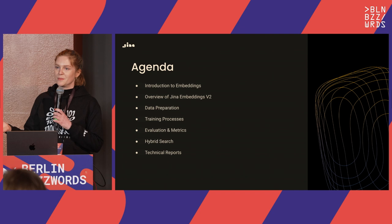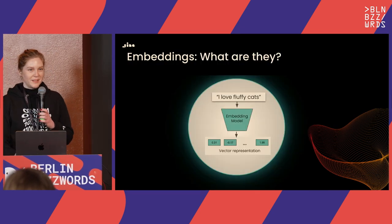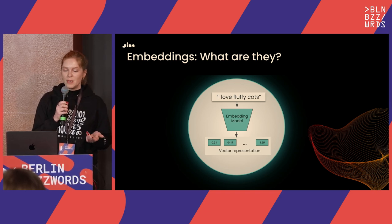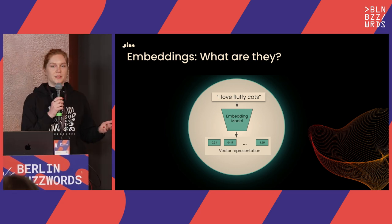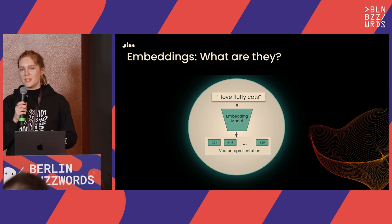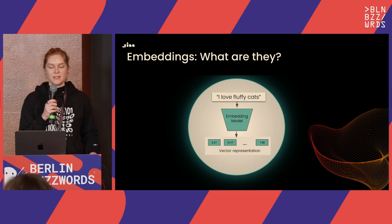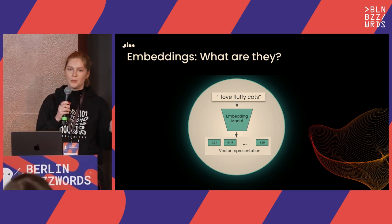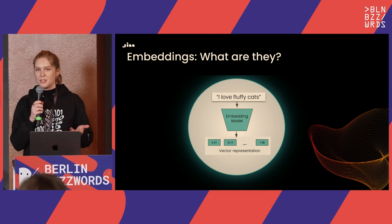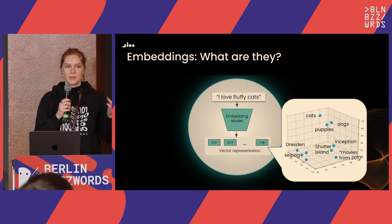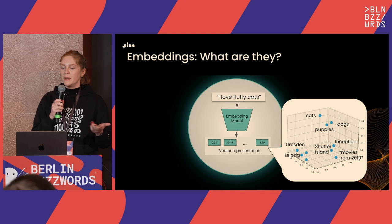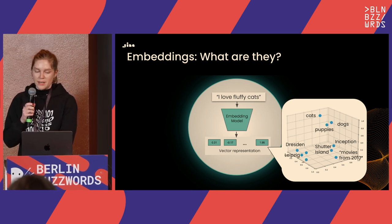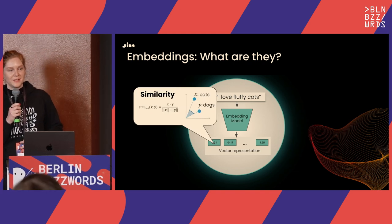Instead of a large language model that generates text, embedding models generate a vector representation of your input. In this case the input is text — for example 'I love fluffy cats' — and ideally if your embedding model is any good, it captures important semantic information in that text as part of the vector representation. These vectors don't mean much to people directly, but documents with similar semantics should be located in a similar subspace within your vector space.